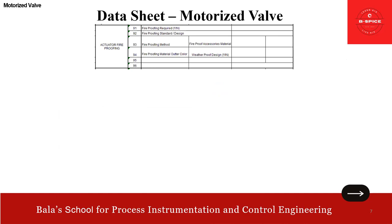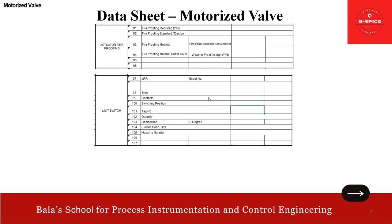Another unique feature pertinent to this motorized valve is the fireproofing requirement. You specify: fireproofing required yes or no, fireproofing standard, fireproofing method, fireproofing accessories, fireproofing material, outer color, and weatherproof design. Then limit switch requirement — if it is applicable, you go with: manufacturer model, type, contact, switching position, tag number, quantity, certification, IP rating, electrical connection size, housing material, etc.